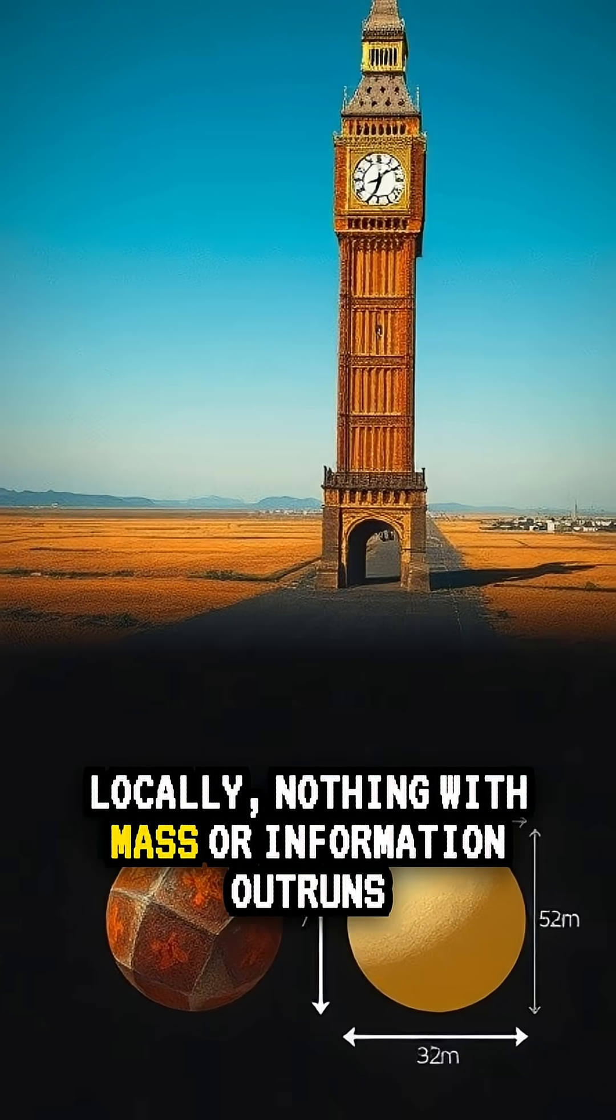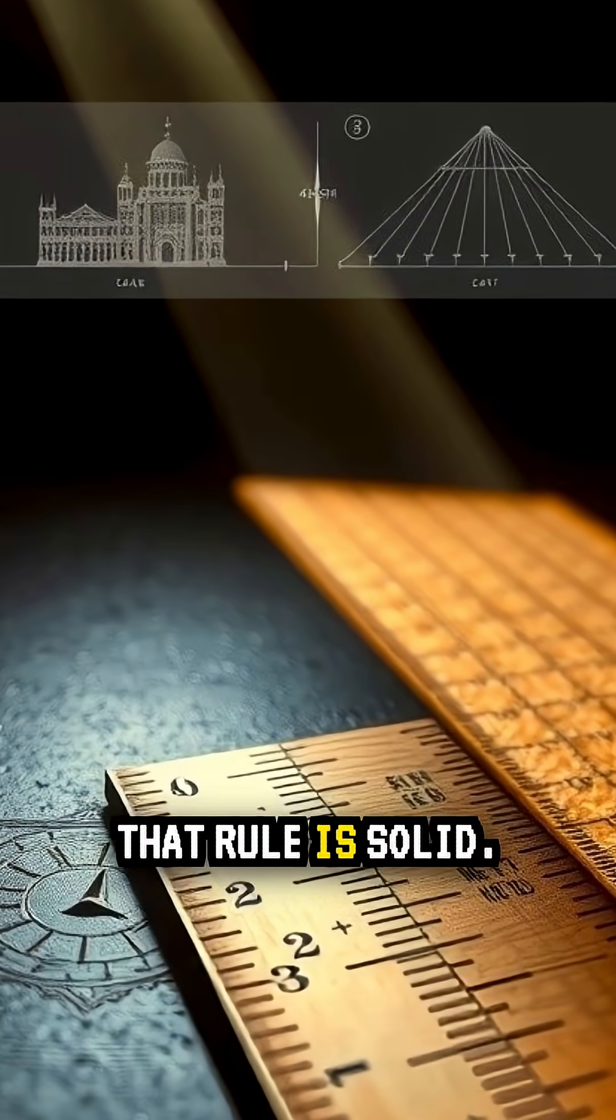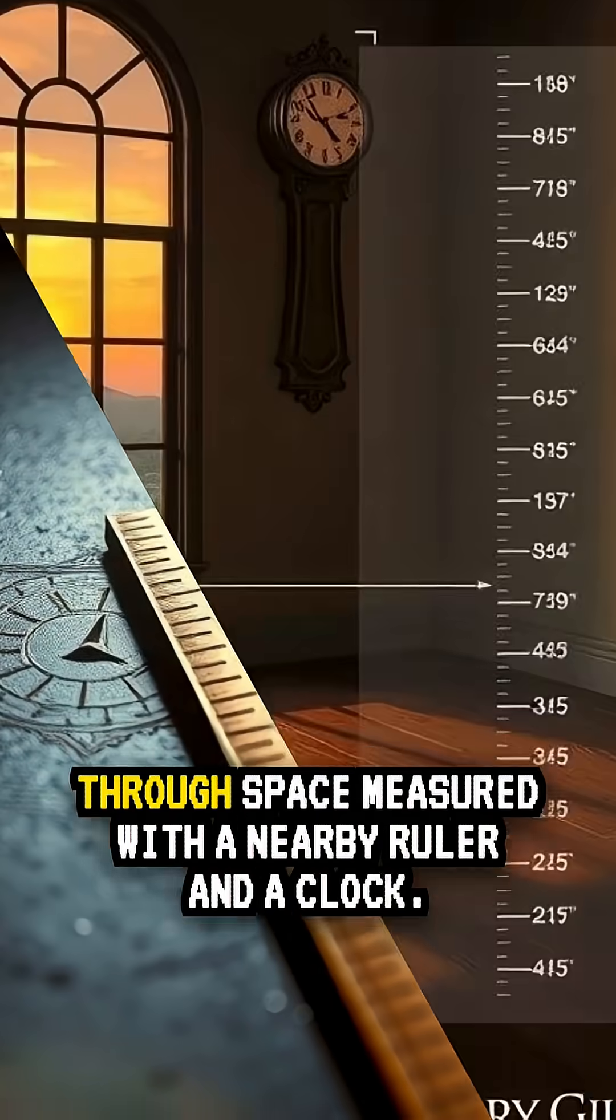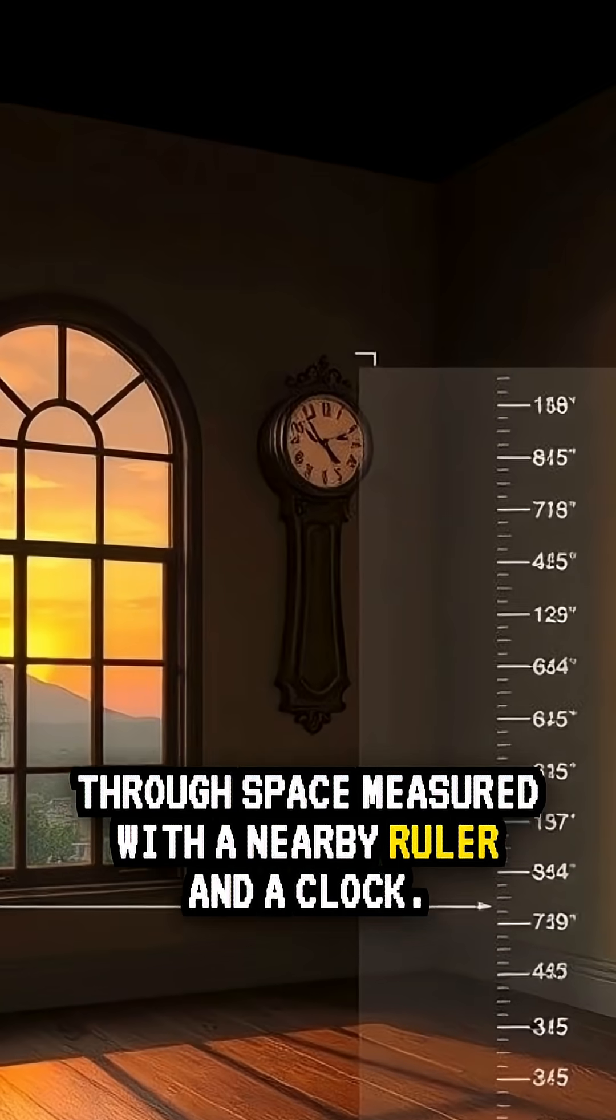Locally, nothing with mass or information outruns light. That rule is solid. It applies to motion through space, measured with a nearby ruler and a clock.